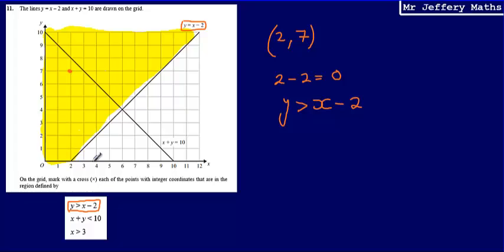Rather helpfully, in this question, they've already drawn two of the straight lines that are being used to define the region that we're looking to try and mark with crosses. So, we've got this point here.